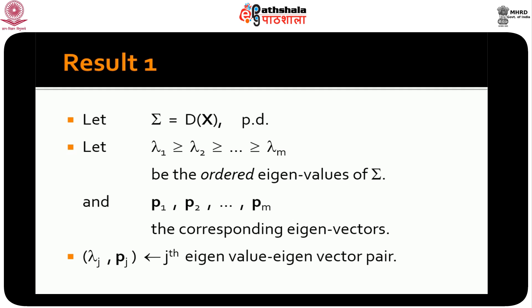Let us begin by assuming that sigma is the dispersion matrix of x, the variance-covariance matrix with variances along the diagonal. Sigma is a positive definite matrix and hence has non-negative eigenvalues. We order these eigenvalues as lambda 1 >= lambda 2 >= ... >= lambda m, largest first and smallest last. Let p1, p2, ..., pm be the corresponding eigenvectors, so the pair (lambda j, pj) is the jth eigenvalue-eigenvector pair.